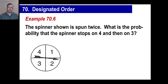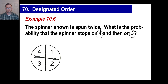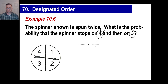You've got a spinner that's spun twice. What's the probability that the spinner stops on four and then on three? Treat each spin as an individual probability. The probability of landing on four is one out of four. The probability of landing on three is also one out of four. Multiply them: one out of 16.